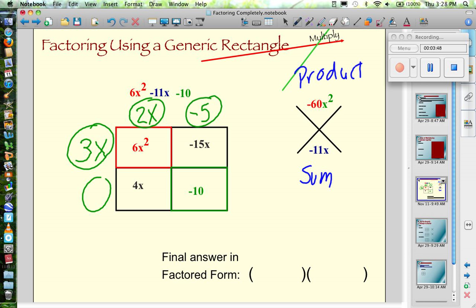I'm only missing one more. And 2x times what number is 4x? And that's going to be 2. Now to double check myself, when I multiply 2 times negative 5, I should get negative 10. And I do. So I'm good.